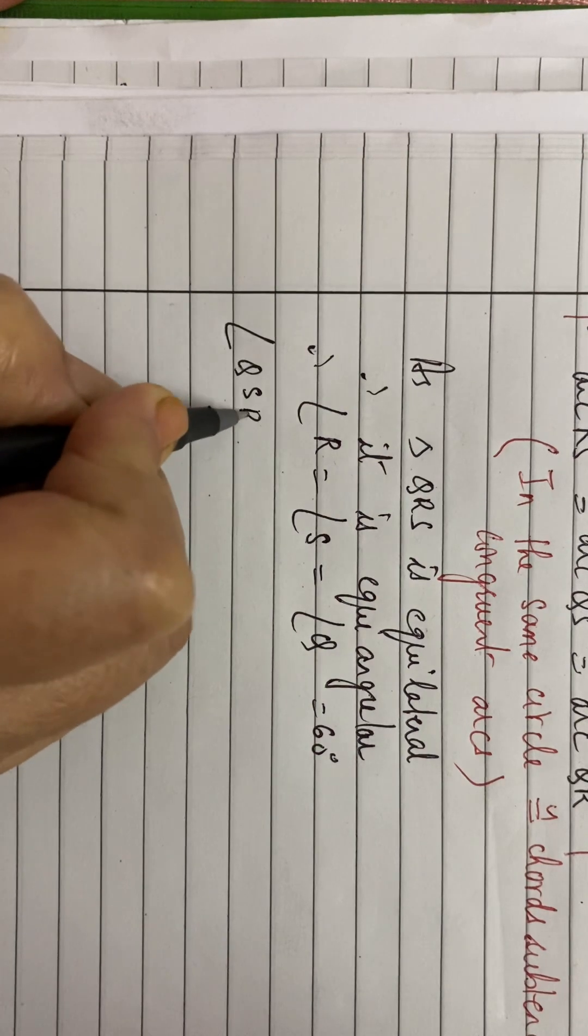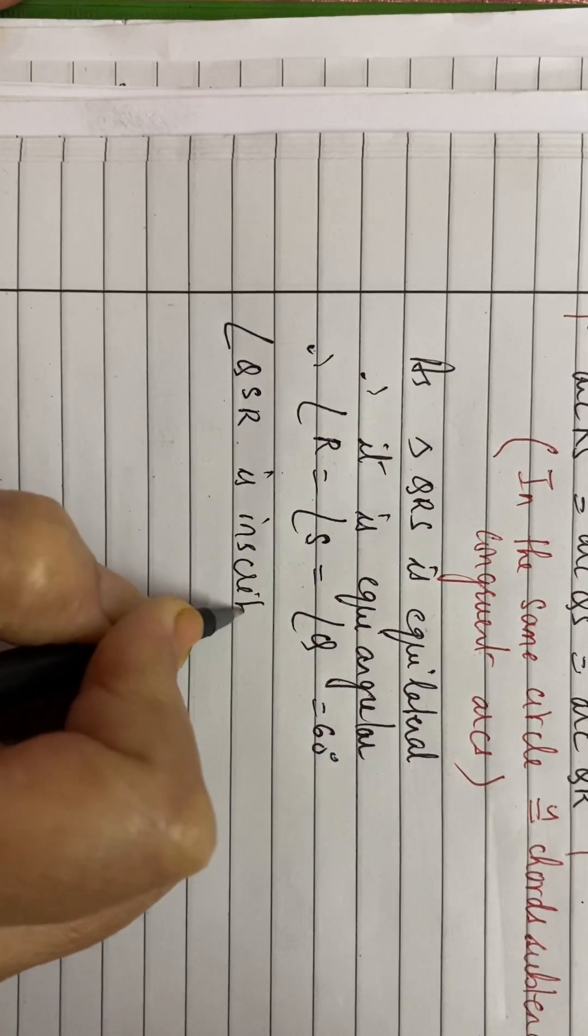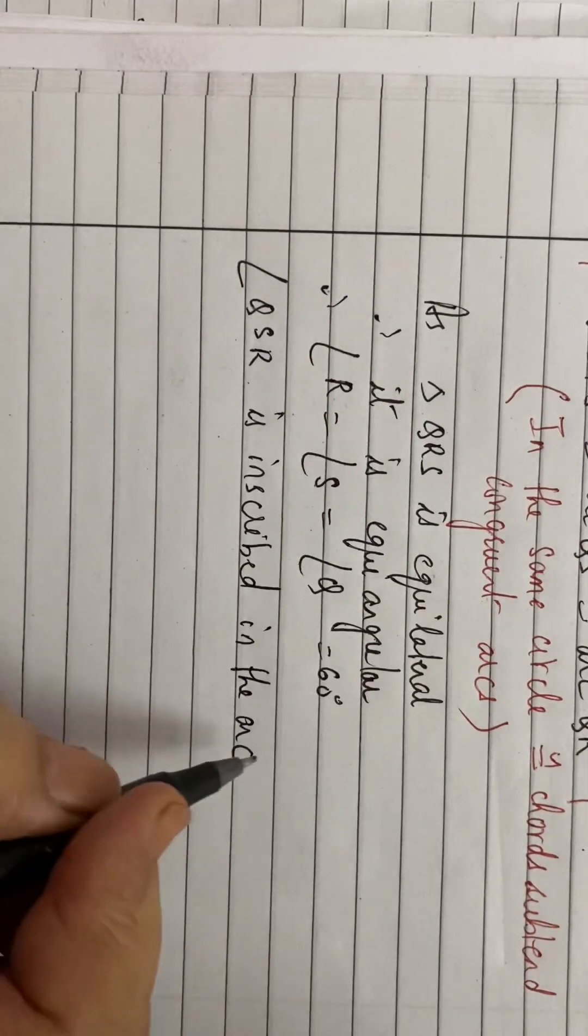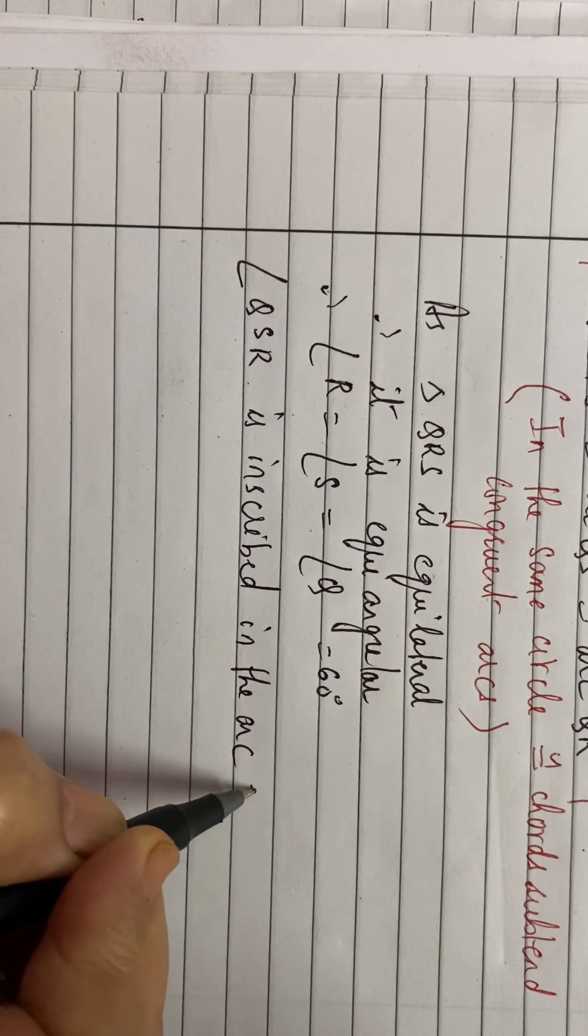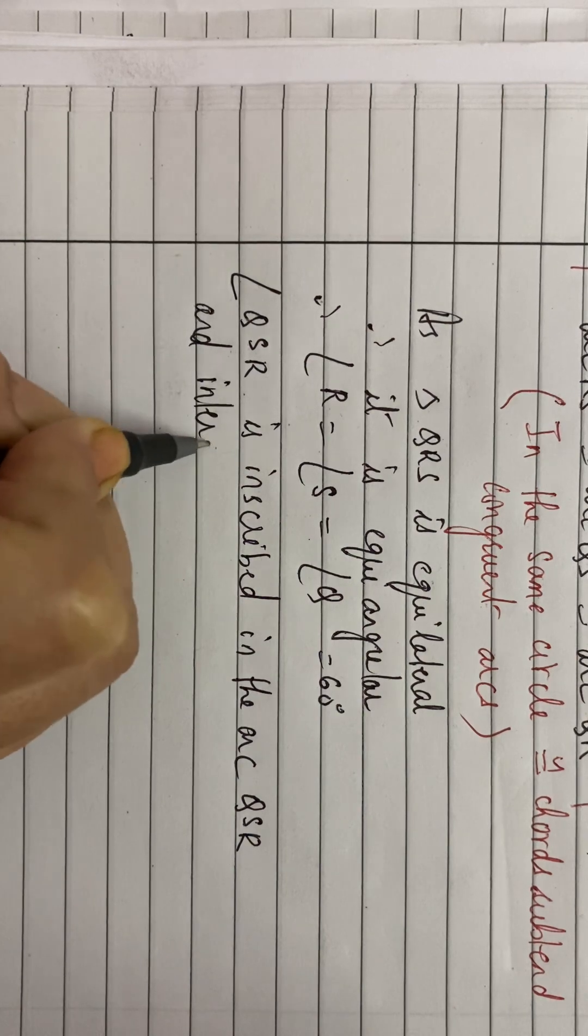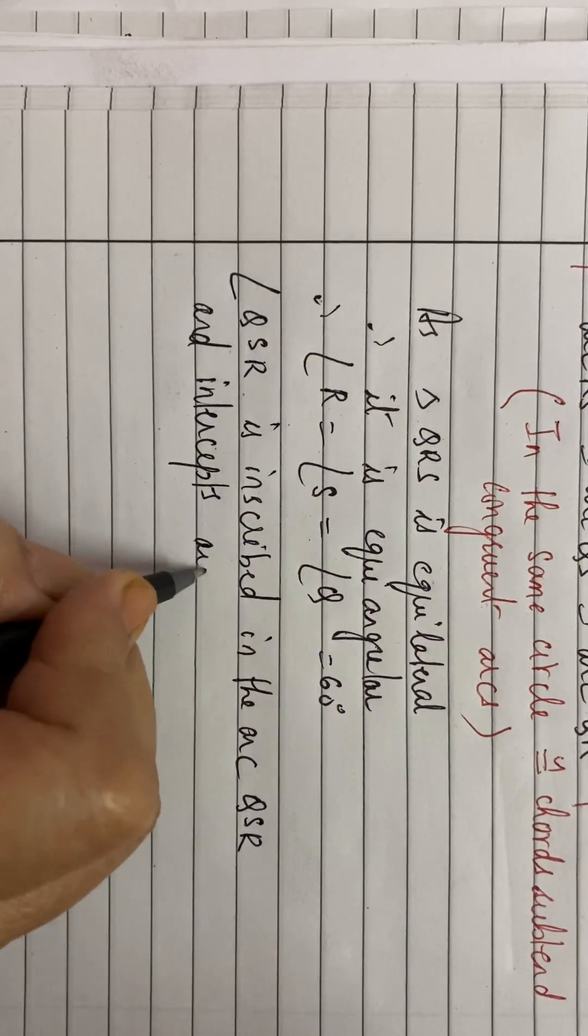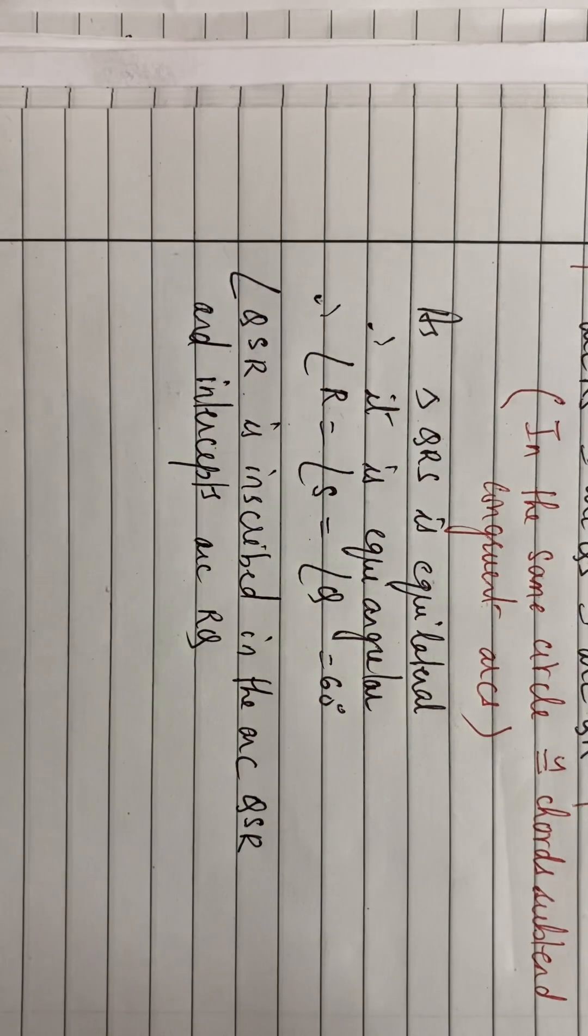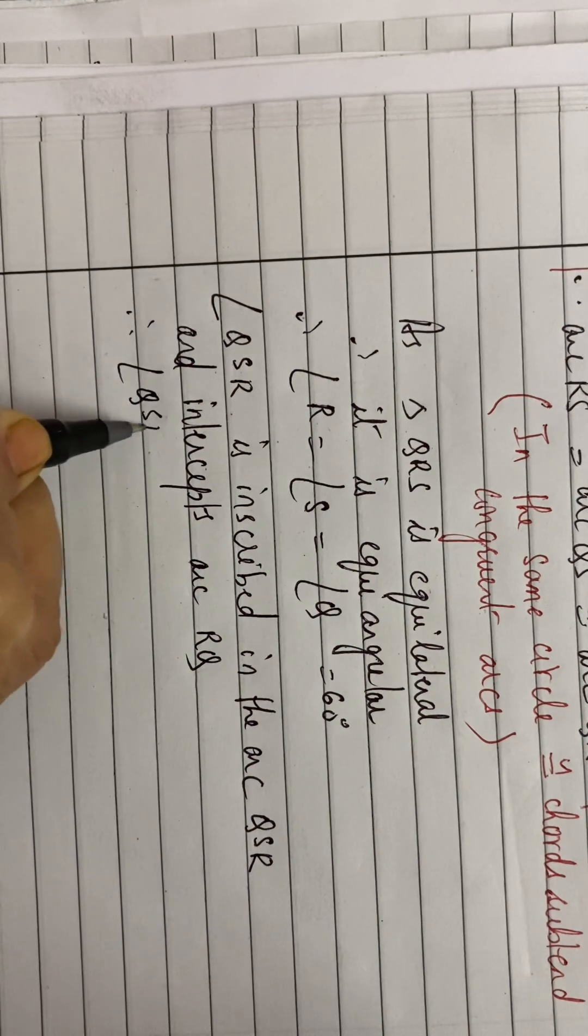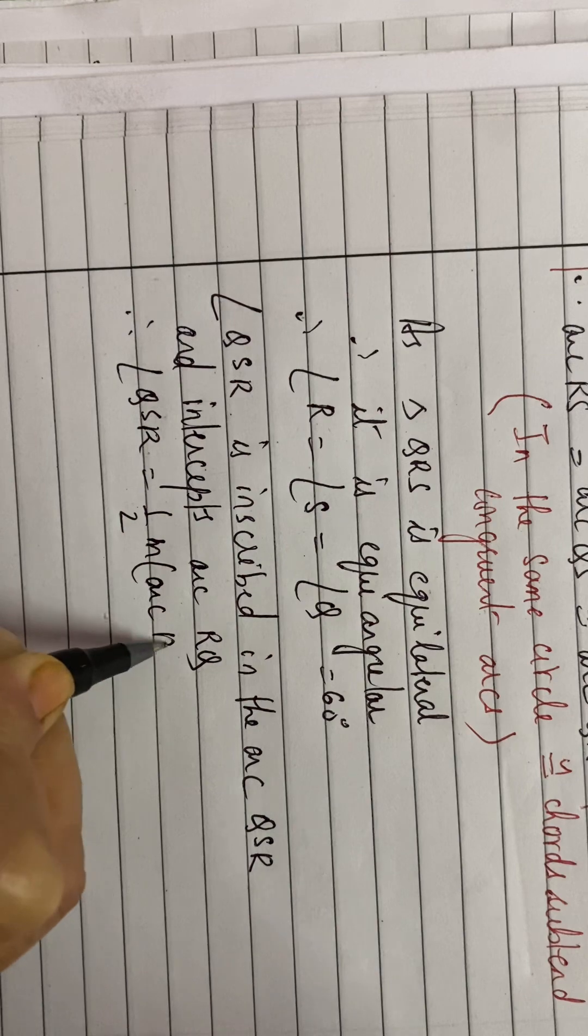Angle QSR is inscribed in the arc QSR and intercepts arc RQ. Therefore, angle QSR is half of measure of arc RQ.